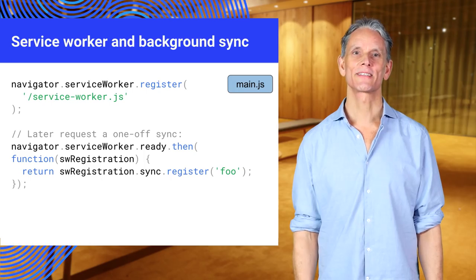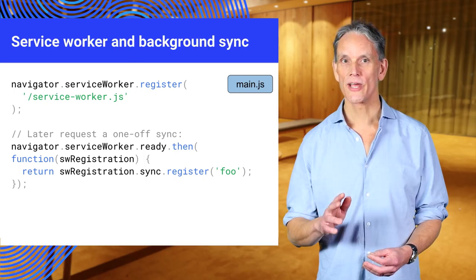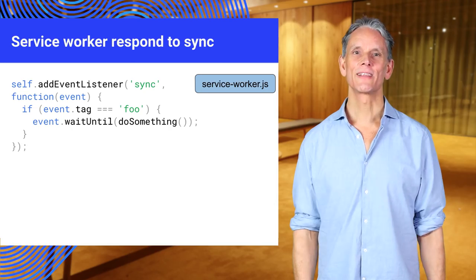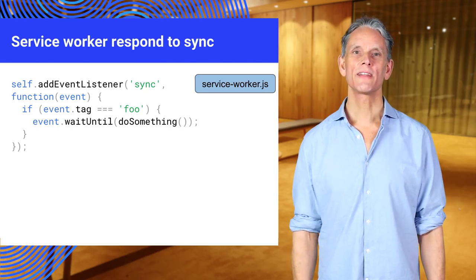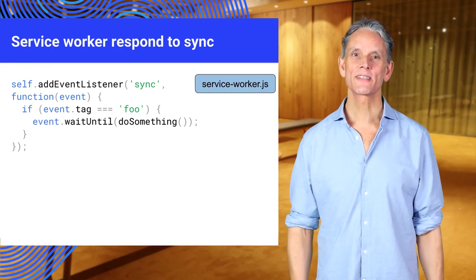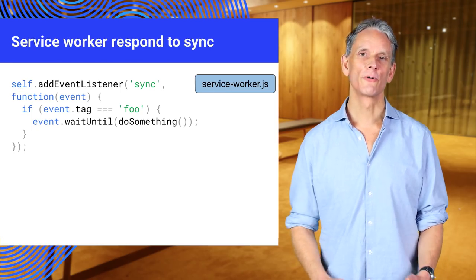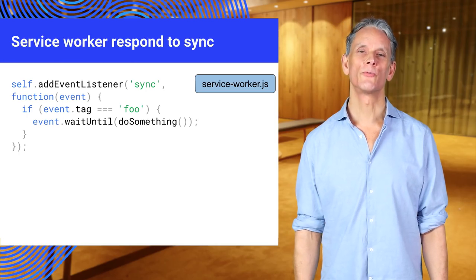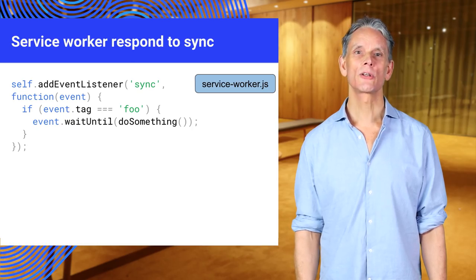Service workers can use background sync. Here we start by registering the service worker and, once the service worker is ready, we register a sync event with the tag 'foo'. The service worker can listen for sync events. If the promise fulfills, the sync is complete. If it fails, another sync will be scheduled to retry. Retry syncs also wait for connectivity and employ an exponential back-off.